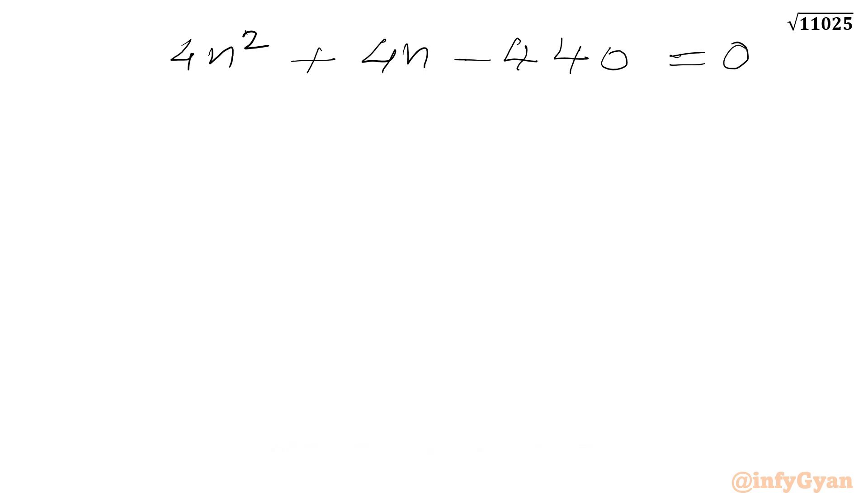Equation is divisible by 4. So I can write n square plus n minus 110 equal to 0.